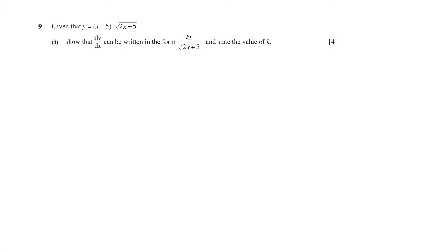This question is from the topic differentiation. An equation has been given as y is equal to x minus 5 times square root of 2x plus 5. We have to find dy over dx and show that it can be written in the form kx divided by square root of 2x plus 5, and by doing so we have to state the value of k.